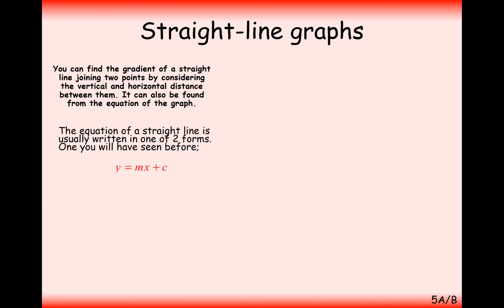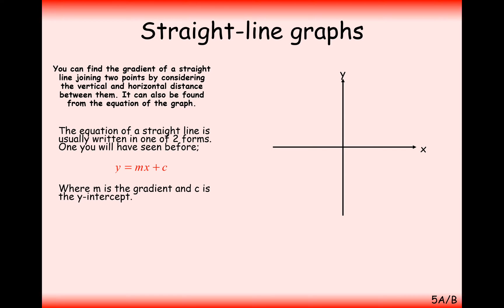The equation of a straight line is always written as y equals some number times x plus some other number, and we generally say y equals mx plus c. The m value represents the gradient of our graph — for every one we go across on the x-axis, we go up by that amount on the y-axis. That's what we define as the gradient.